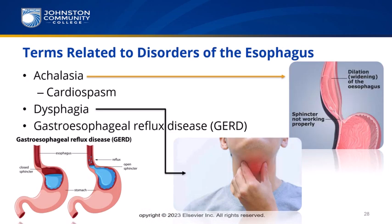Terms related to disorders of the esophagus: Achalasia is the condition of being without relaxation — an impairment of normal peristaltic movement of the esophagus along with the inability of the lower esophageal sphincter to relax and allow food into the stomach. Synonyms include esophageal aperistalsis — the prefix a- means without — megaesophagus — mega means large — and cardiospasm, meaning an involuntary contraction of the cardiac sphincter near the heart.